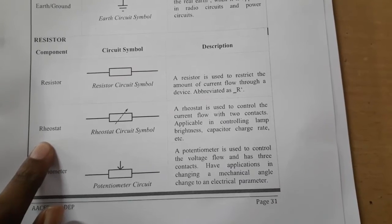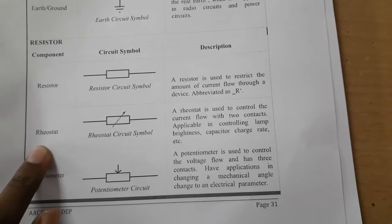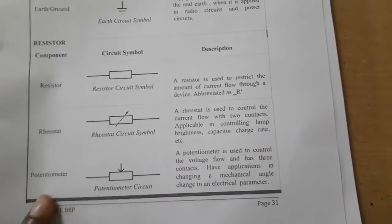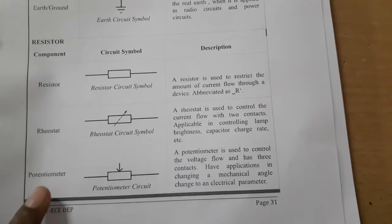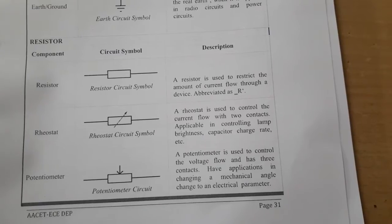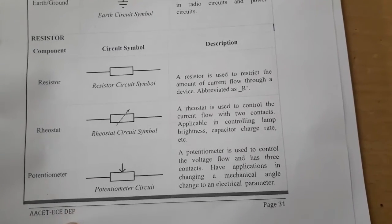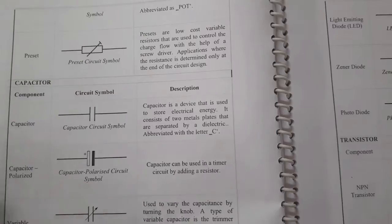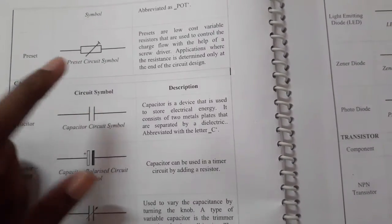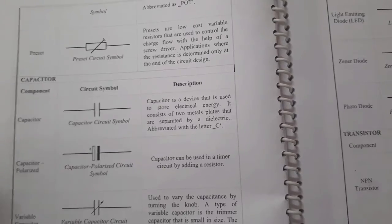Next is a rheostat, which opposes current flow and has two contacts. A potentiometer opposes current flow using voltage, and has three contacts. Next is the preset — this is the symbol. A preset is used to adjust resistance with the help of a screwdriver.